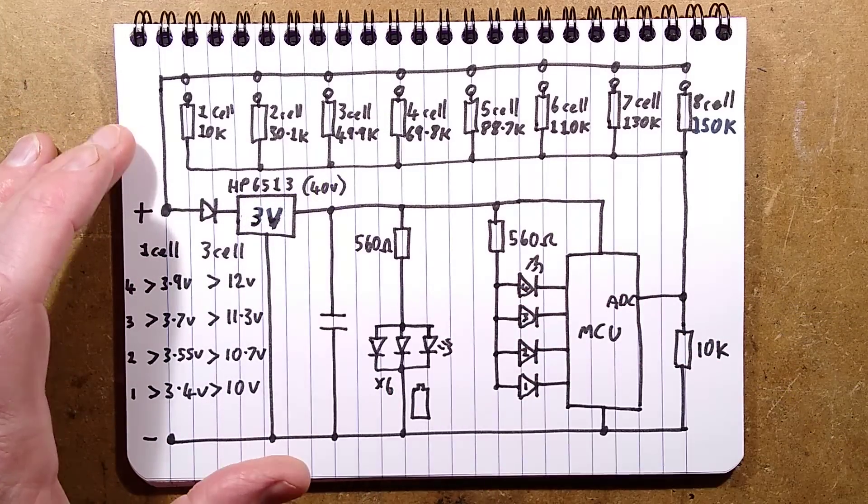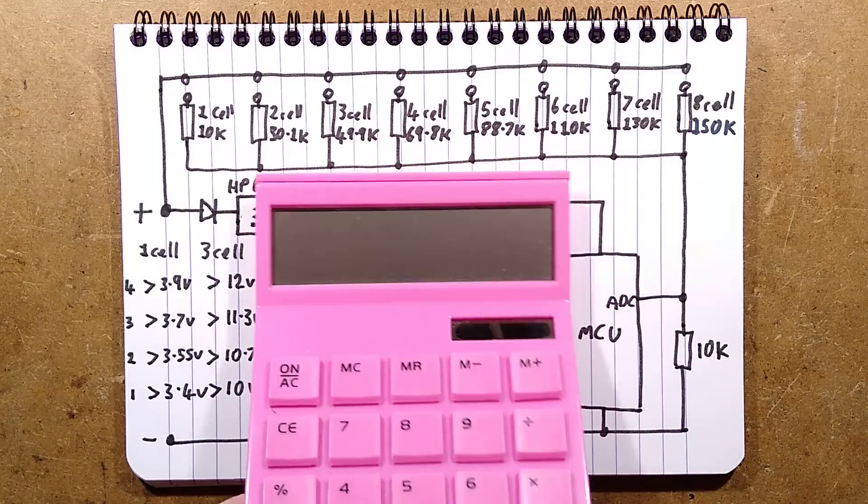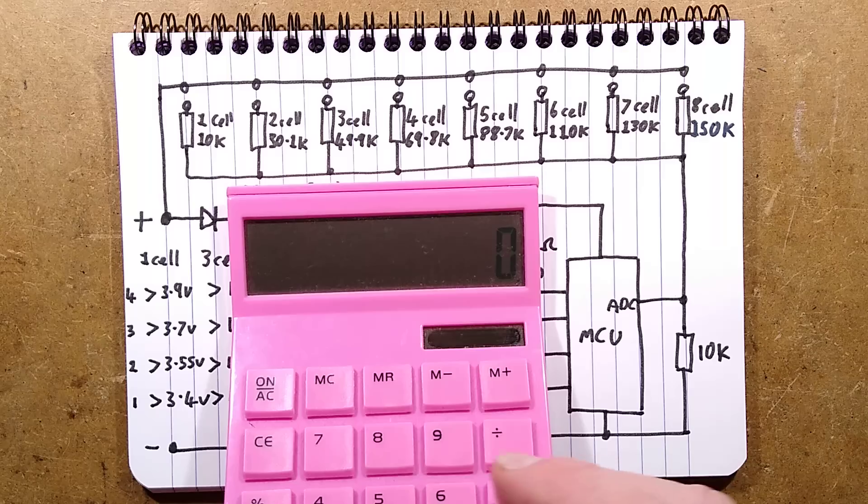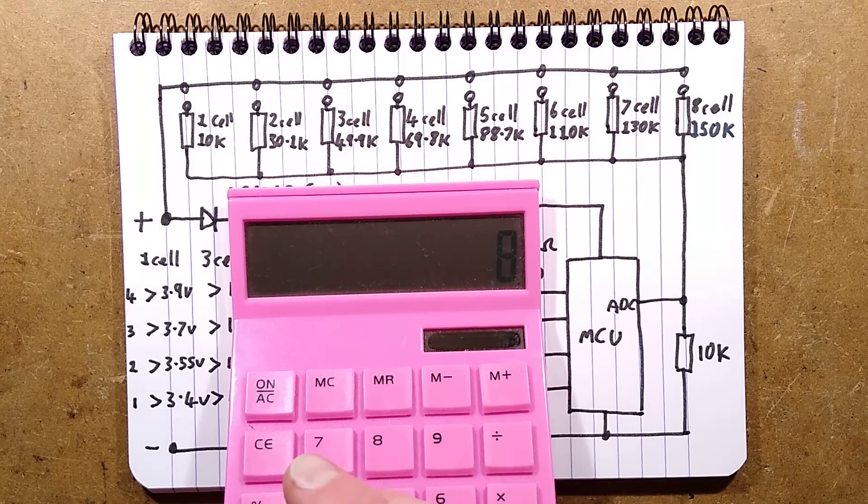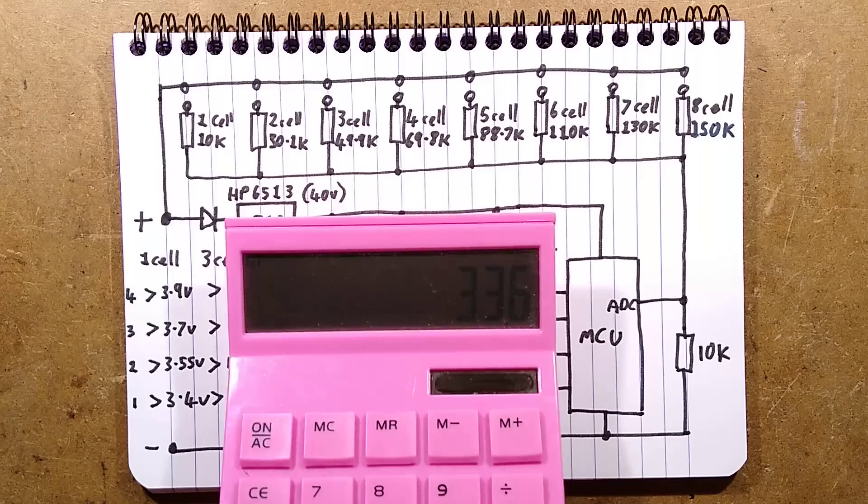It's notable it's rated up to 40 volts. This is useful because if you set it to the highest setting here, the potential voltage is going to be eight cells times 4.2 volts equals 33.6 which is quite high.